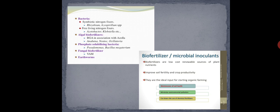Azotobacter is a motile, gram-negative bacteria found in the soil. Klebsiella is also a nitrogen-fixing bacteria. These are all free-living nitrogen-fixing bacteria.